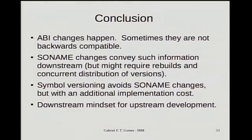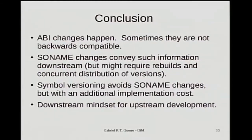As a conclusion: ABI changes happen — it's a fact of life. Sometimes they're not backwards compatible and we have to deal with it. Soname changes convey such information downstream so people don't suffer with crashes and weird behaviors, but this might require rebuilds and concurrent distribution of multiple library versions. Symbol versioning kind of avoids soname changes but has an additional implementation cost — you have to maintain those versions files and header magic redirections. But I like that because I think of it as upstream development having a downstream mindset — you care about your downstream while you're working upstream. Thank you.